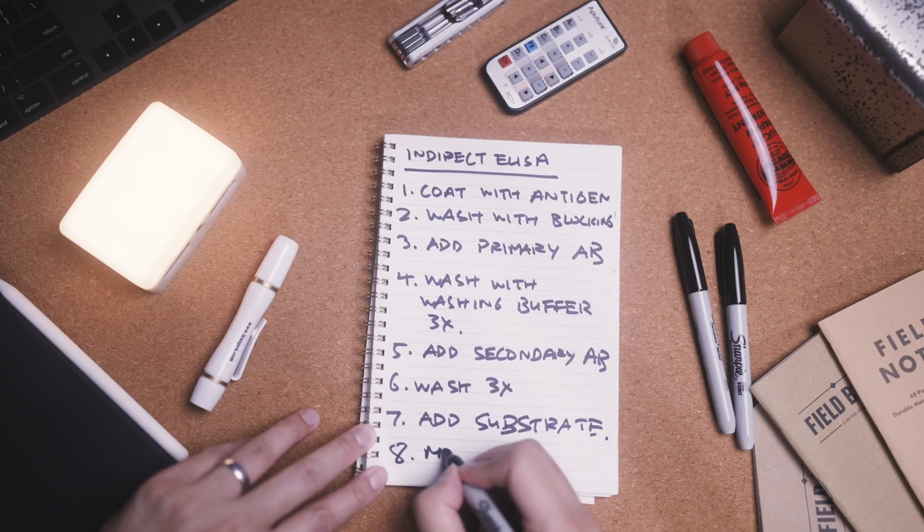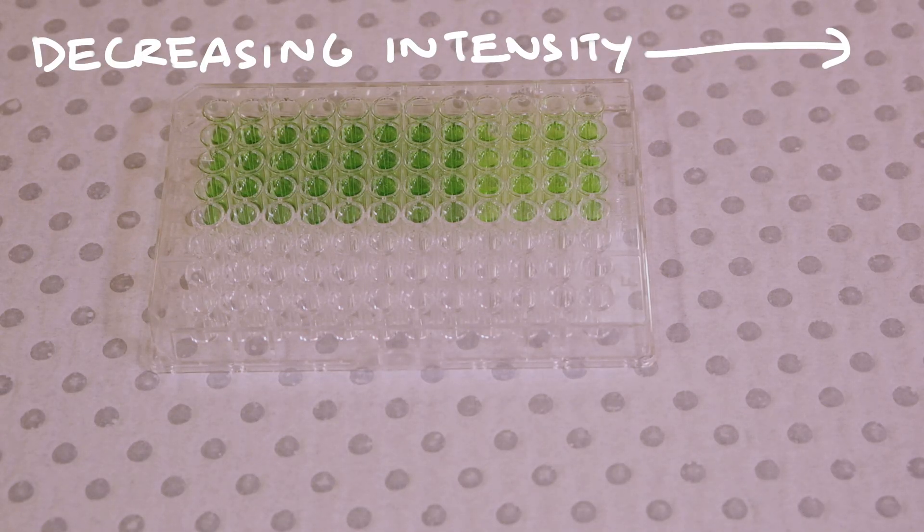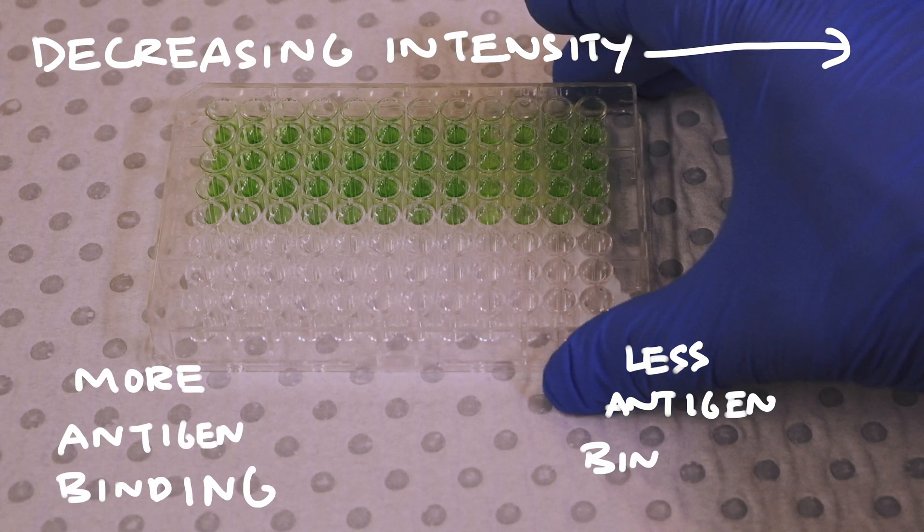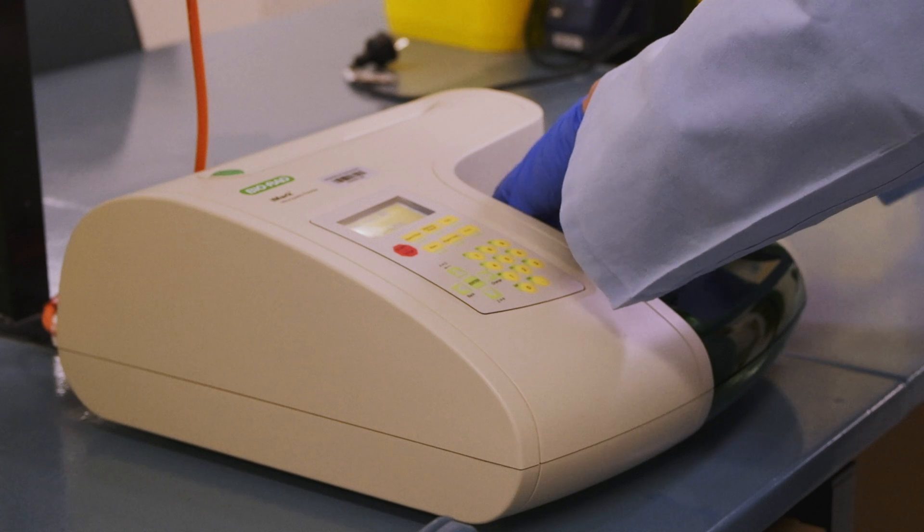This plate is now ready for analysis on a plate reader. Notice how some wells are darker than others. This is because those wells had more antigen binding and are able to give up a stronger signal because of the increased antigen binding. The plate reader will read the intensity of the color in the well and give you a numerical reading, which you can use for a variety of data analysis.